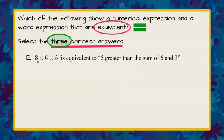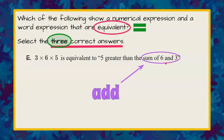Choice E: three multiplied by six multiplied by five — is it equivalent to 'five greater than the sum of six and three'? Sum of six and three means to add, and this numerical expression has no addition signs, so we can rule out choice E — these are not equivalent.